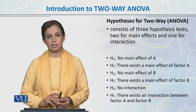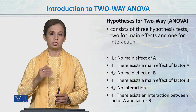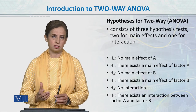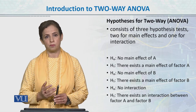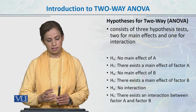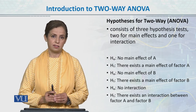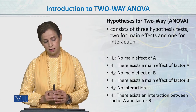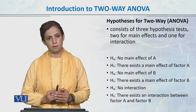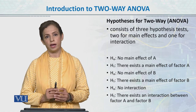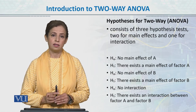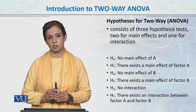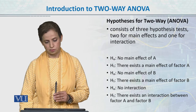We will make hypotheses — we always start with the null hypothesis then move to the research hypothesis. For factor A, the null hypothesis is that there is no main effect of factor A, and the research hypothesis is that there exists a main effect of factor A. For factor B, similarly, the null hypothesis states no effect and the research hypothesis states there exists a main effect of factor B. The third hypothesis is about the interaction: that there exists an interaction between factor A and factor B.